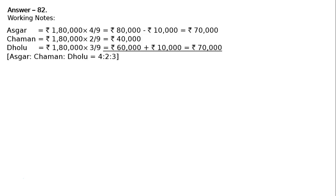This Rs. 10,000 will be compensated by Oskar, because Oskar has personally guaranteed to Dholu. Any deficiency arising on this account shall be made good by Oskar. Hence, Rs. 10,000 is deducted from Oskar. Dholu should get Rs. 1,10,000 including salary; he is getting Rs. 60,000 profit and Rs. 40,000 salary = Rs. 1,00,000, so Rs. 10,000 is added. The final profit figures — Rs. 70,000, Rs. 40,000, and Rs. 70,000 for Oskar, Chaman and Dholu respectively — will be shown in the profit and loss account.